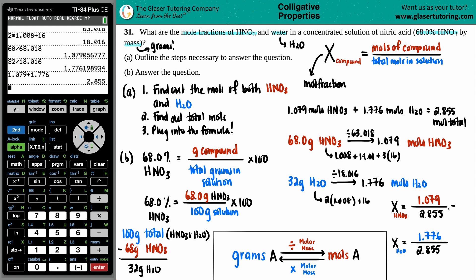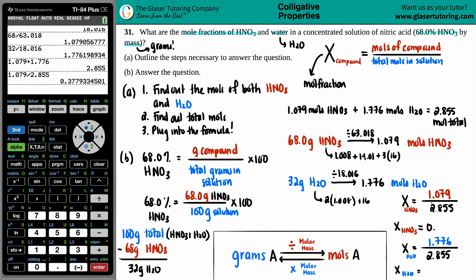And, let's see what we get. Maybe what I can do is, move this up a little bit, move this down a little bit. There you go. So, for X and X, HNO3, and H2O. Let's see. 1.079, divided by 2.855. Okay, so I get 0.378, that's one answer, and then 1.776, divided by 2.855, 0.622, and those are your two answers.